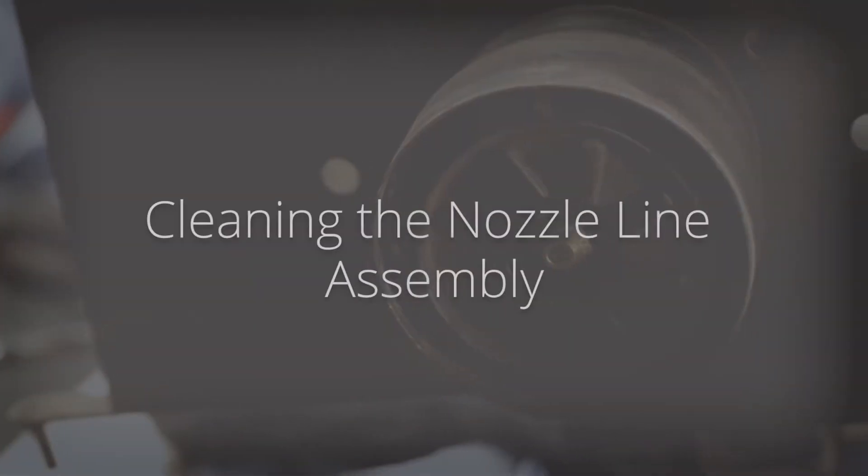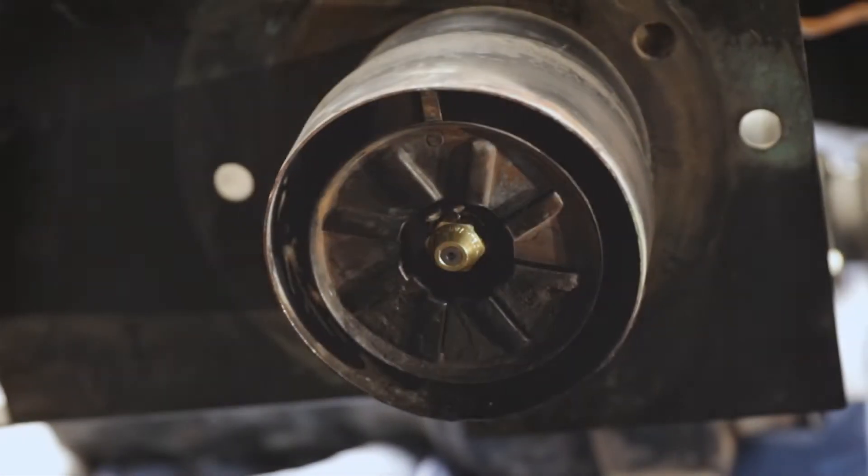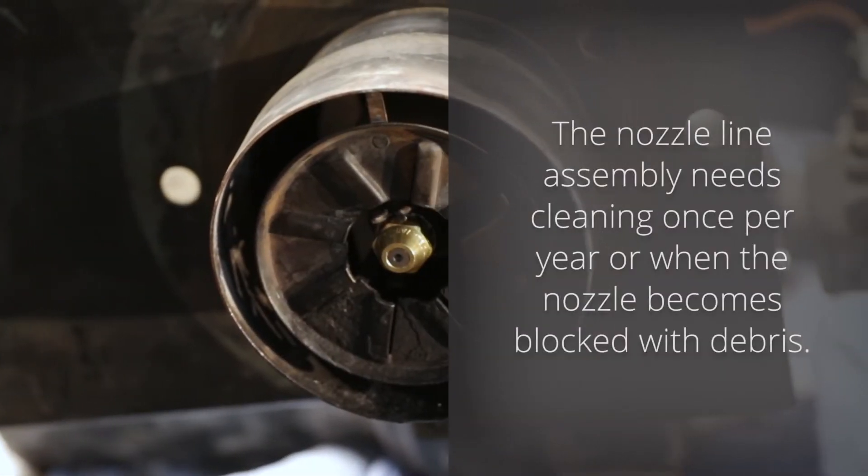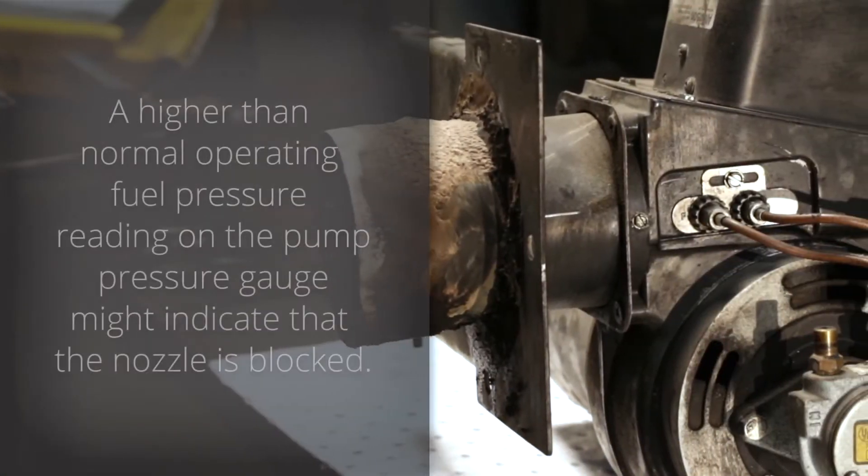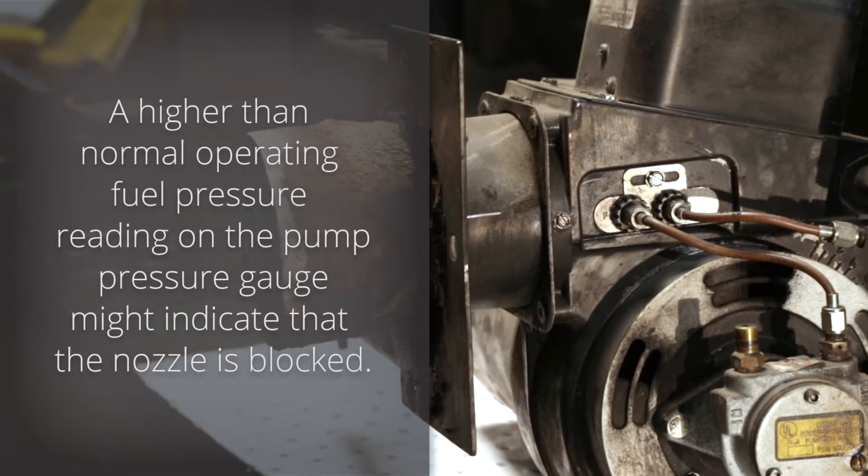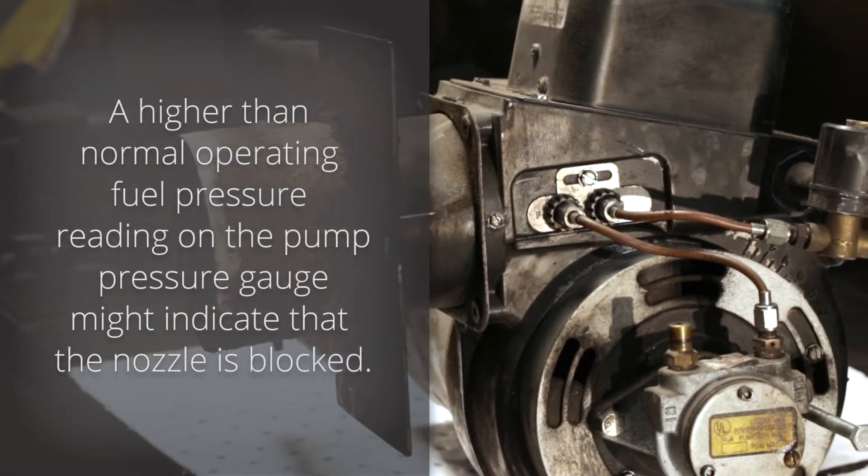In this video, we'll explain how to clean the nozzle line assembly in your EnergyLogic waste oil heater. The nozzle line assembly needs cleaning once per year or when the nozzle becomes blocked with debris. A higher than normal operating fuel pressure reading on the pump pressure gauge might indicate that the nozzle is blocked.